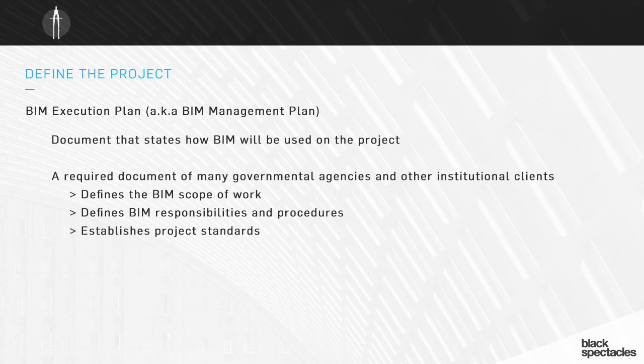This document basically does three things. Number one, it defines the BIM scope of work — what is going to be done in BIM on that project. The next thing it does is define the BIM responsibilities and procedures for everybody on the team: what the architect's responsibilities are, what the structural engineer's responsibilities are, and all of the various people that are involved and what they're going to be doing on this project.